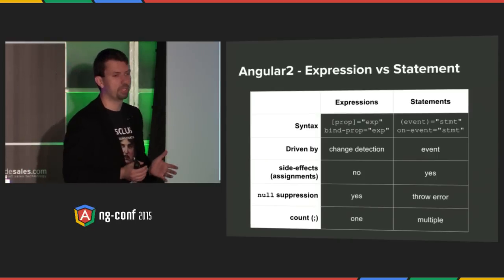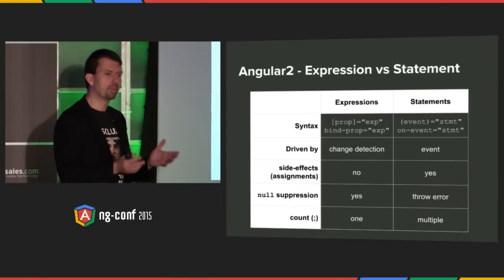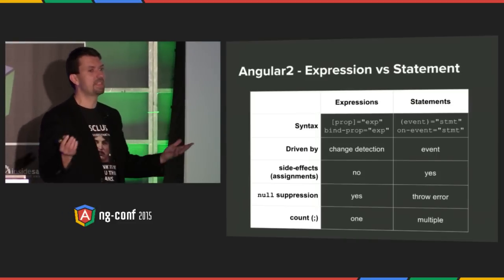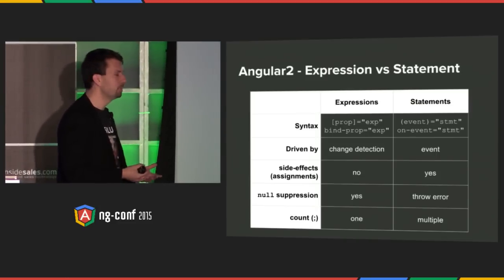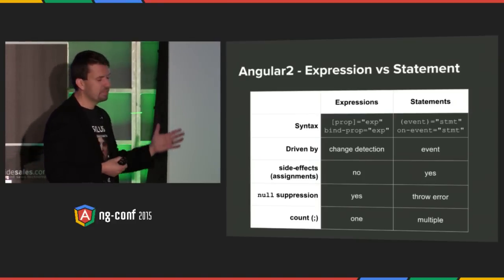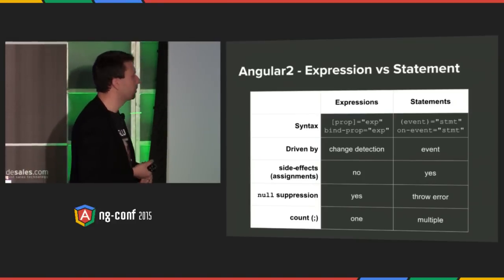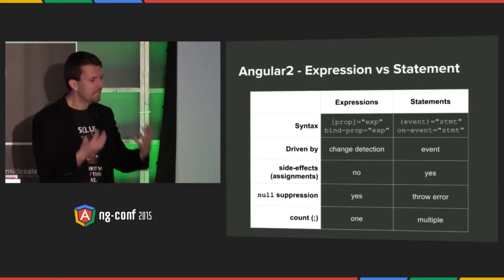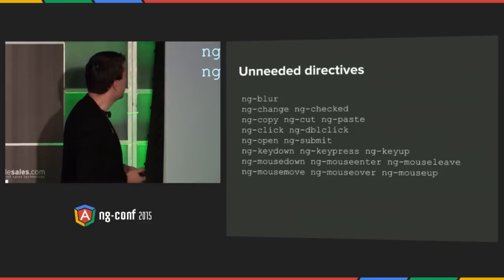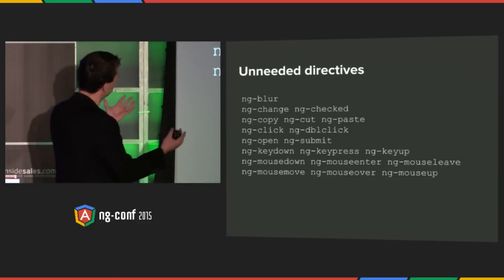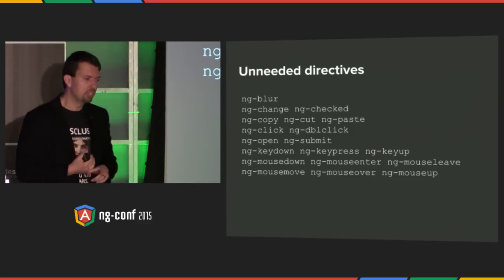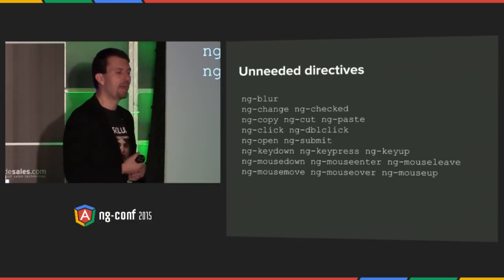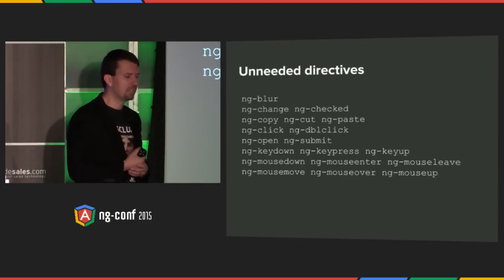There are interesting things we can do based on these distinctions — for example, null suppression. Null suppression is wonderful inside of double curlies but counterproductive inside of statements, because you register a listener, start clicking, nothing happens, and you don't know why — because we're null suppressing. When you have statements you can use a semicolon, but you cannot with expressions. The expression has to evaluate to a value. By separating these things out, it's easier to reason about. And this set of directives allows us to get rid of more directives — blur, change, checked — all of these event-related directives are unneeded because they're covered directly by the syntax. There are about 20 more directives that can be removed.